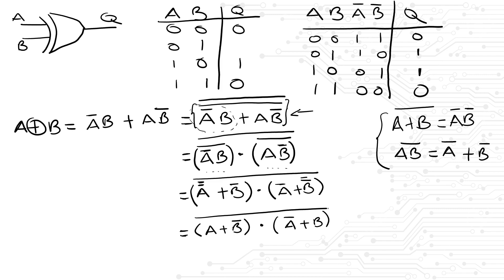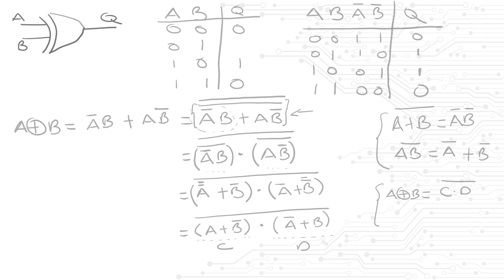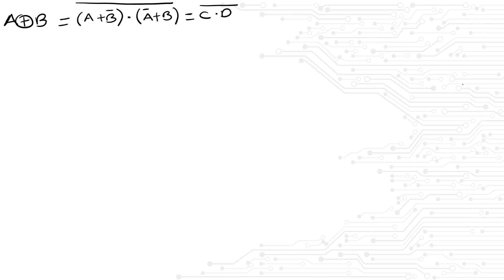There is not much more manipulation that we can do here. So let's label these terms as C and D. We have that A XOR B is equal to (CD)̅.